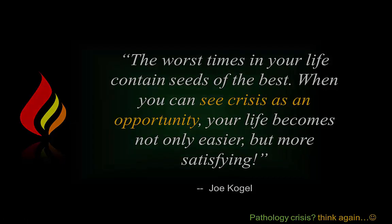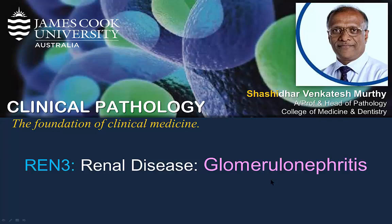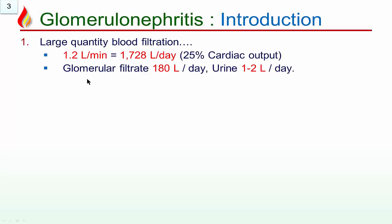Welcome. I am now covering glomerulonephritis, the pathology of. Glomerulae are microscopic structures but they perform a big function. 1.2 litres of blood flows through them — 1728 litres per day. The glomerulae filtrate 180 litres per day, much of it is reabsorbed, leaving about 1 to 2 litres of urine per day.